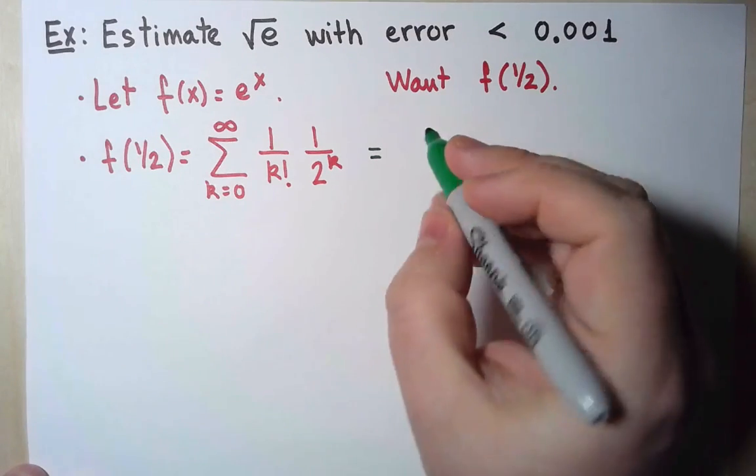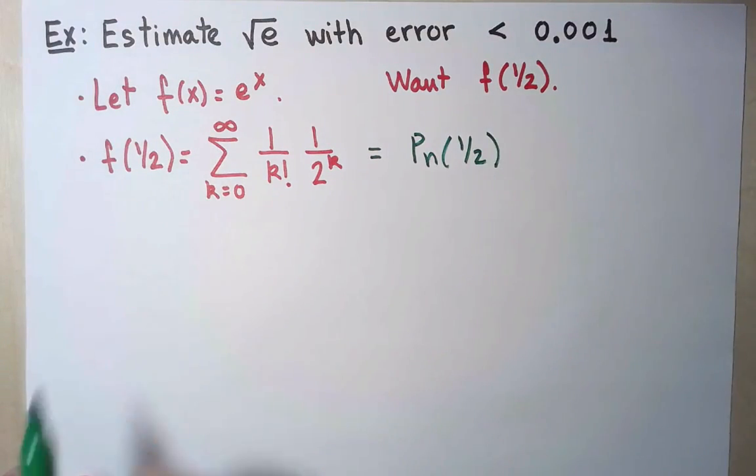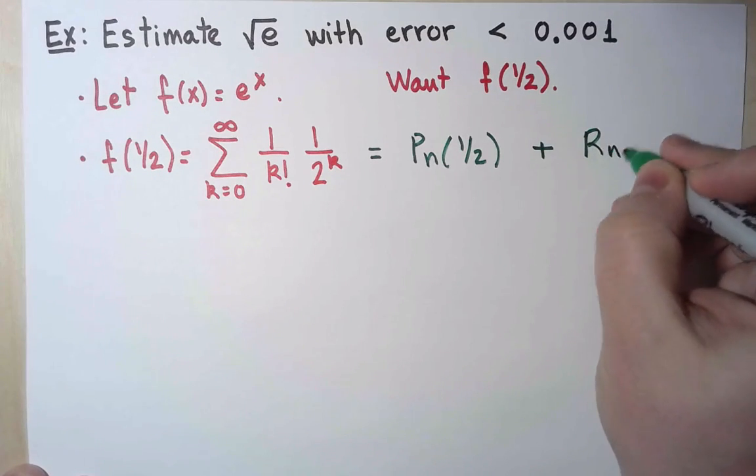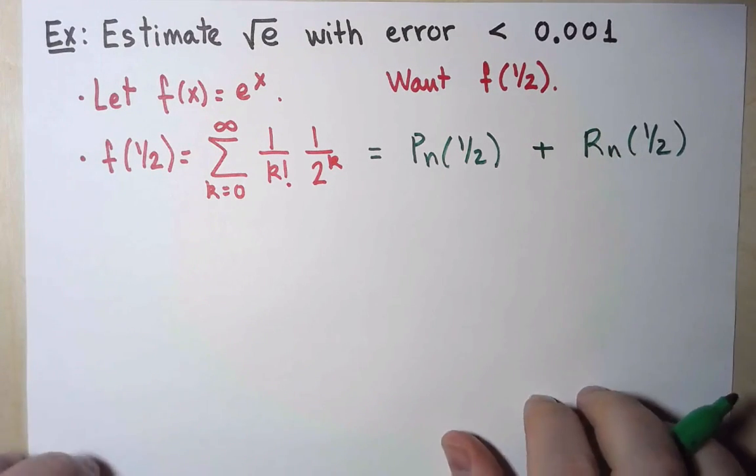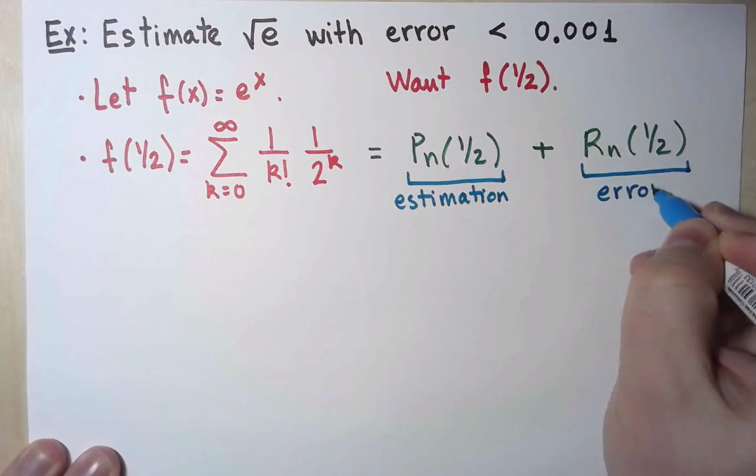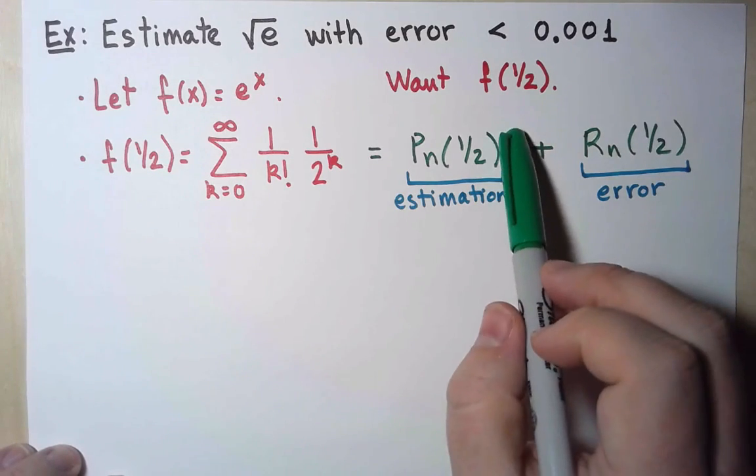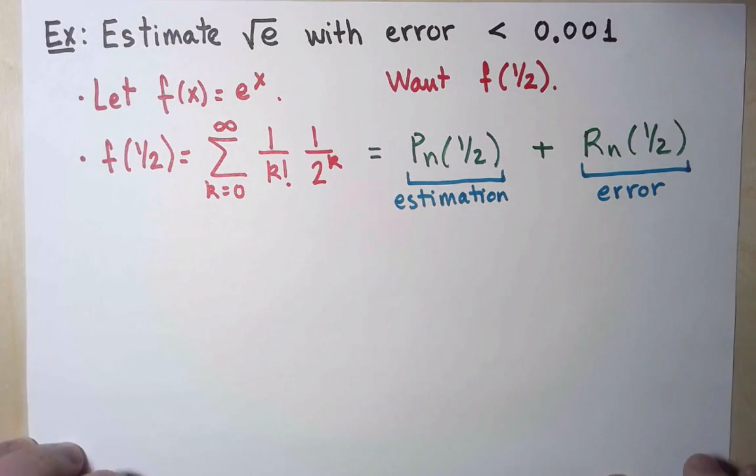To make this explicit, I can approximate it by the n-th Taylor polynomial at 1/2, which could be a partial sum. And what I have left is what I call the n-th remainder. And the remainder will be the error. And this will be the number I actually calculate that I use as an estimation or approximation.